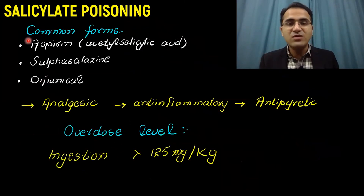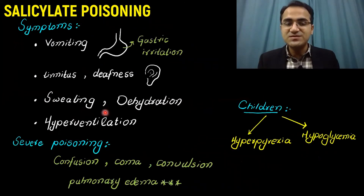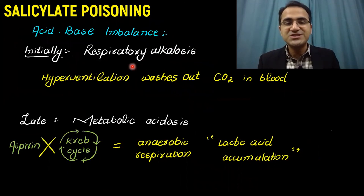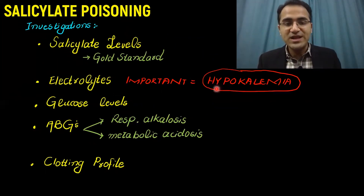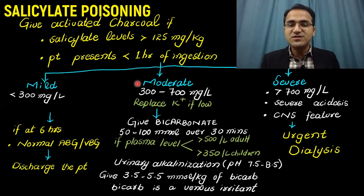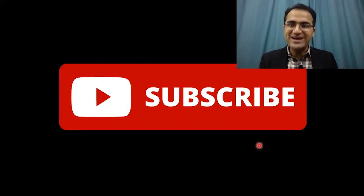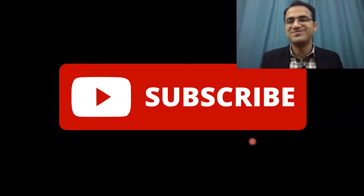In summary, we talked about different forms of salicylates and the overdose level of greater than 125 mg per kg. Symptoms include GI effects, tinnitus, sweating, hyperventilation, and in severe cases confusion, coma, and convulsions. In children, hyperpyrexia and hypoglycemia are prominent. Initially there is respiratory alkalosis; later, metabolic acidosis. Investigations include salicylate levels, electrolytes showing hypokalemia, ABGs, and clotting profile. Treatment: activated charcoal for mild cases with observation; potassium replacement and bicarbonate for moderate cases; and urgent dialysis for severe cases. Check out other videos on toxicology and emergency medicine — links are in the description below. Thank you.